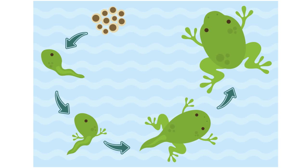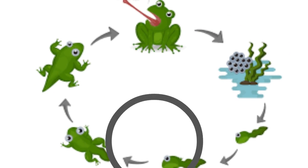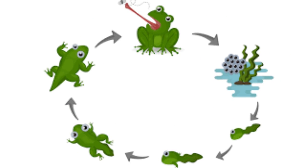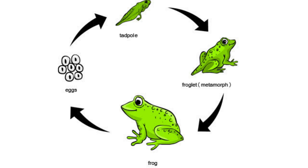During metamorphosis, the tadpole will develop back legs first, then front legs. Around six weeks of life, the mouth starts to widen. Sometime around ten weeks, the frog's eyes start to bulge out and the tail begins to shrink and eventually disappear. When the lungs finish developing, the frog makes its way onto land — and it's a frog!